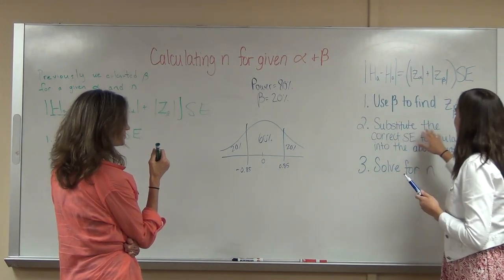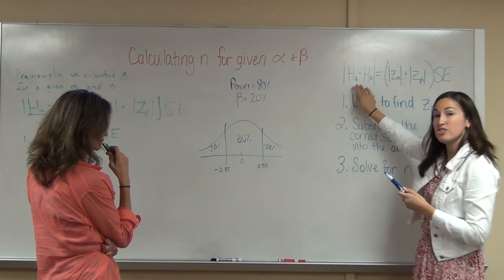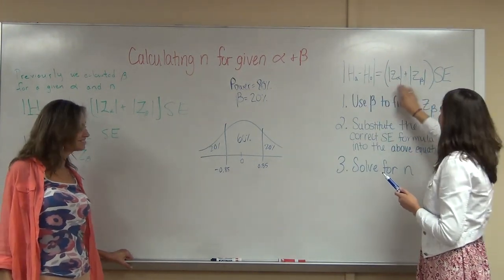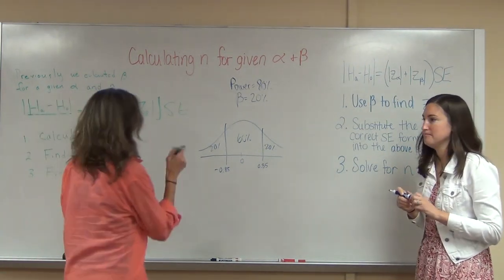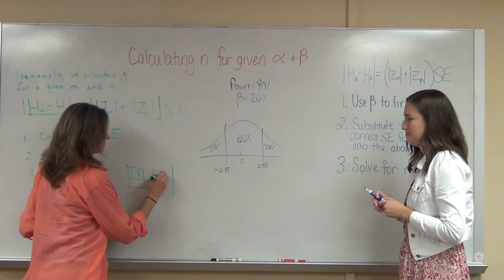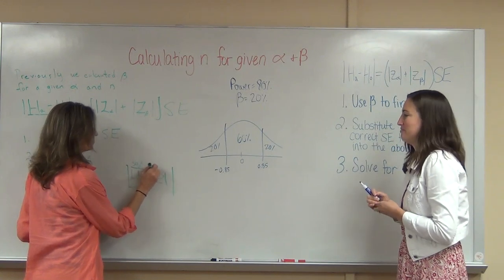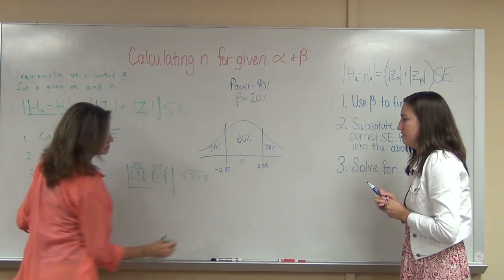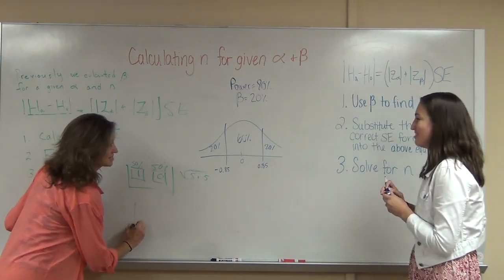The next step is to substitute the correct standard error formula into the above equation. I have Z-beta, I have Z-alpha, so which standard error should we use? It was a box, under the null it just looks like this—we're doing the same experiment—one when you guess it correctly, zero when you don't. So it's a 50-50 chance under the null, and the square root of 0.5 times 0.5 is your SD, and you're going to solve for the N.